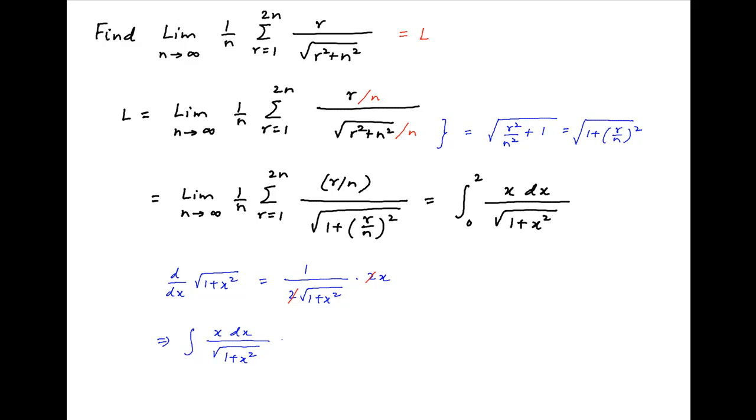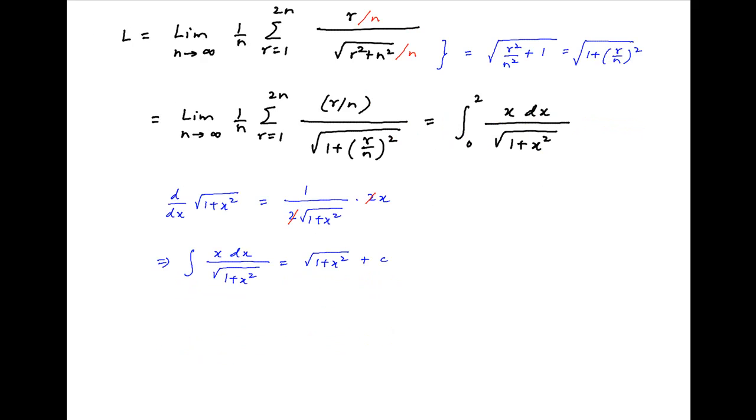Therefore, the integral of x upon square root of 1 plus x squared is equal to square root of 1 plus x squared, plus the constant of integration.